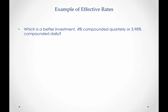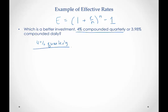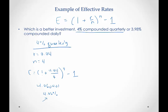Okay, last example. I encourage you to pause the video and see if you get the same answers as me. The first thing I'm going to do is write down the formula. We have 4% compounded quarterly: that's an interest rate R of 0.04, and quarterly means 4 times a year, so N is 4. So E is equal to 1 plus 0.04 divided by 4, to the 4th, minus 1. When we calculate that, I end up getting 4.060401, so basically 4.06%. That would be the equivalent simple interest rate for one year.